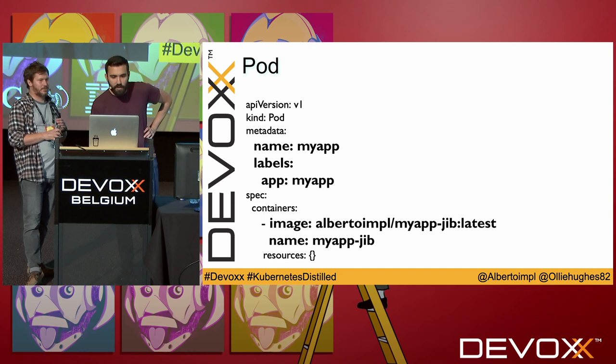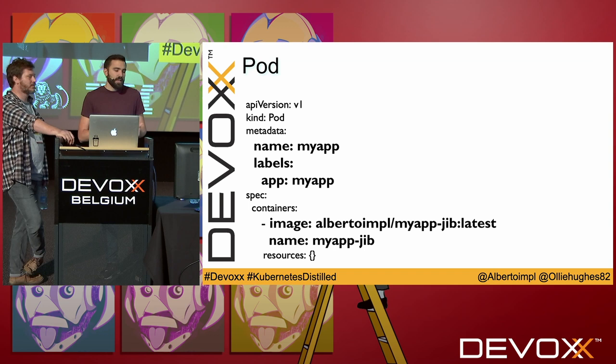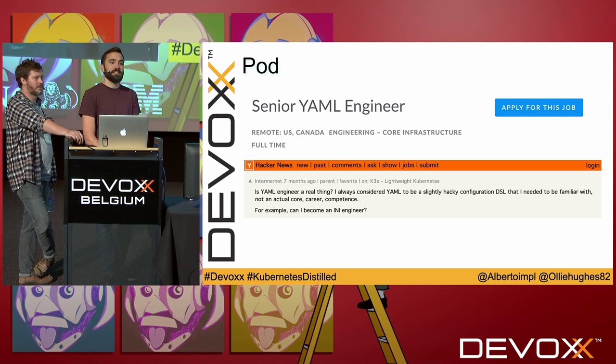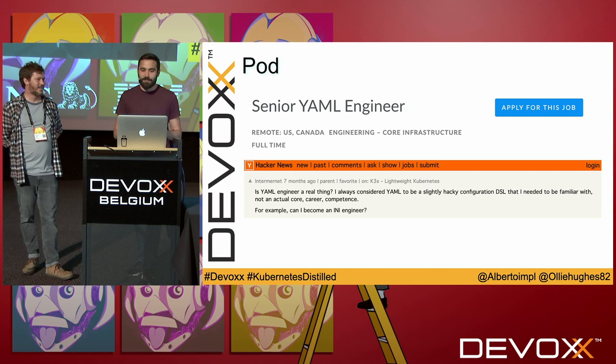This is what a pod manifest looks like. The important things are the pod name, the image, and the label — that's really all you need to create a pod. Congratulations, you're now one step closer to becoming a YAML engineer. We'll be handing out certificates at the end. There is apparently a demand for it now.